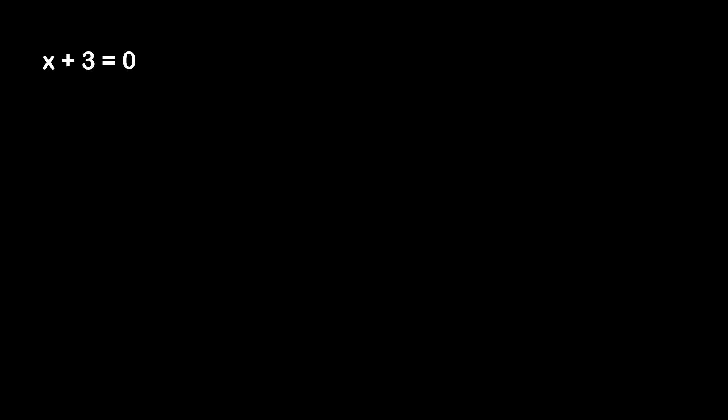We're thinking it'd be really nice to subtract 3 from the left-hand side, because we know that 3 minus 3 is 0, and we'd just be left with x. But it's very important that whatever we do to one side of the equation, we do to the other side of the equation. So if we're subtracting 3 from the left-hand side, we also have to subtract 3 from the right-hand side in order for the equation to remain true.